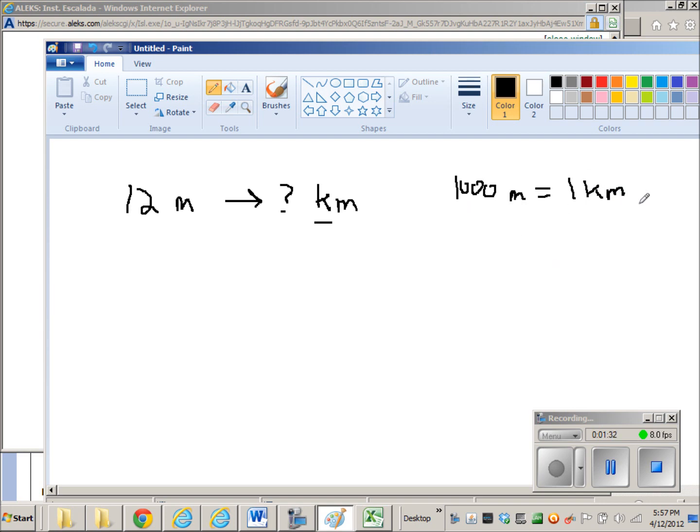That means, since these two things are equal, I can actually multiply anything by 1,000 meters over 1 kilometer, or I can multiply anything by 1 kilometer over 1,000 meters and not change the value of the actual number or measure that I started with.